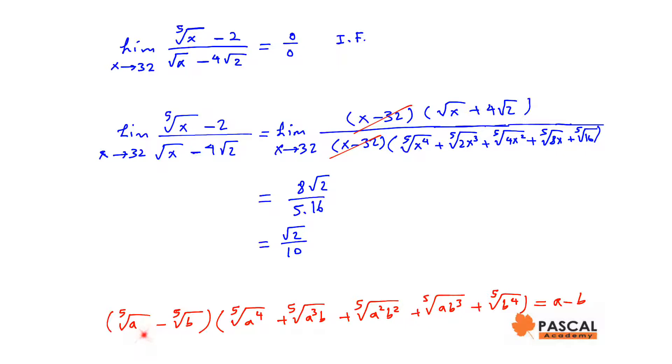we use the fact that (5th root of a minus 5th root of b) times (5th root of a^4 plus 5th root of a^3b plus 5th root of a^2b^2 plus 5th root of ab^3 plus 5th root of b^4) equals a minus b.